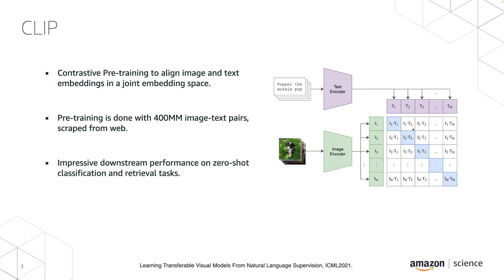This sort of pre-training is helpful for a lot of different downstream tasks, and this pre-training was done on 400 million image-text pairs scraped from the web.